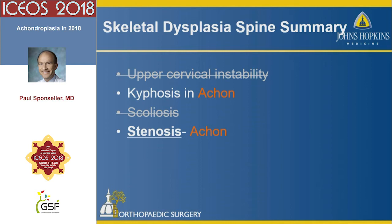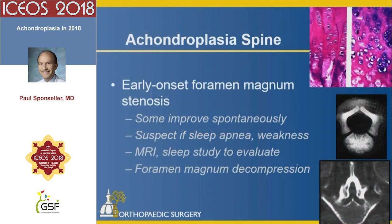Achondroplasia, which is by far the most common skeletal dysplasia, almost never has any kind of upper cervical issue, and there is rarely any scoliosis. But the two things that plague these young people and then adults are thoracolumbar kyphosis and especially persistent and pernicious spinal stenosis, which just gets worse over time.